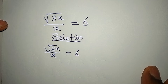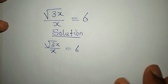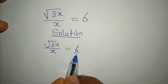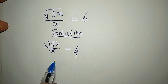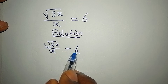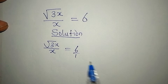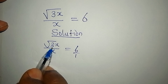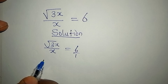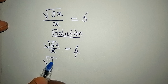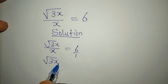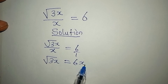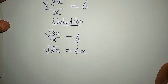One of the simplest methods you can use is the cross multiplication method. So we have root 3x multiplied by 1, and that gives us root 3x, which is equal to x multiplied by 6, giving us 6x.